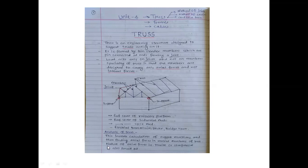Analysis of truss involves calculations of support reactions. As I told you, these are the supports — this is a hinge support and this is a roller support. We are supposed to find out the two reactions at the hinge point and one reaction at the roller point, by considering only external loading. Loads will act at a joint. Then the member forces — forces coming in a member, whether they are tensile or compressive — are also worked out.